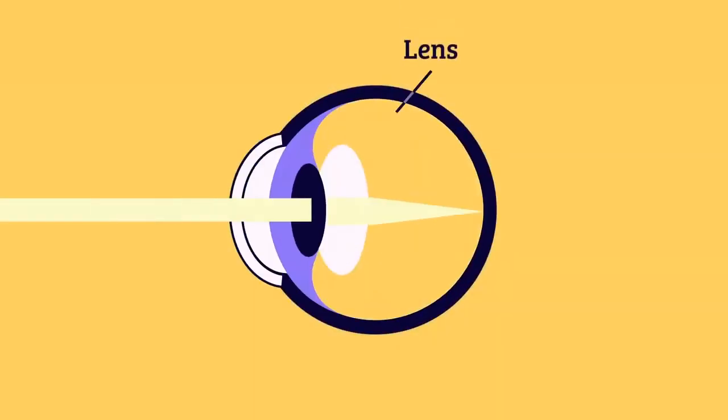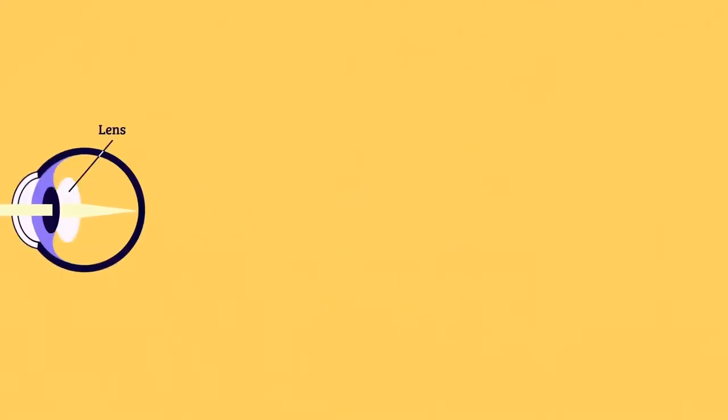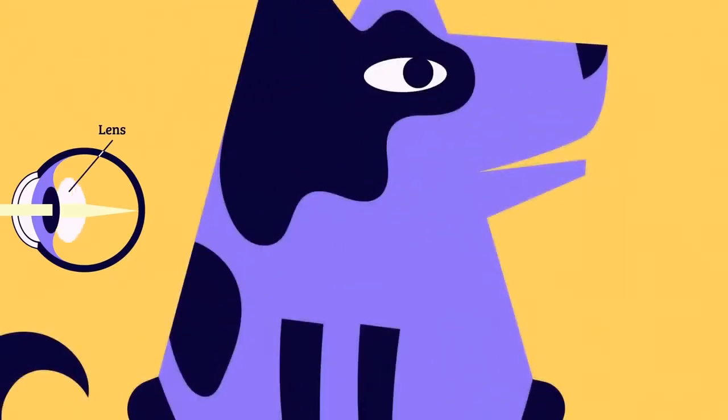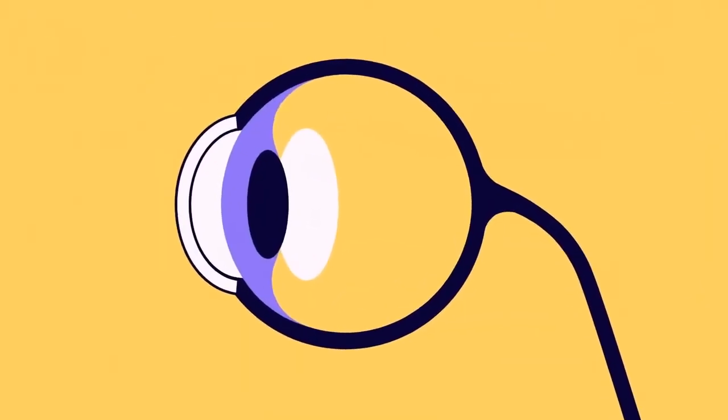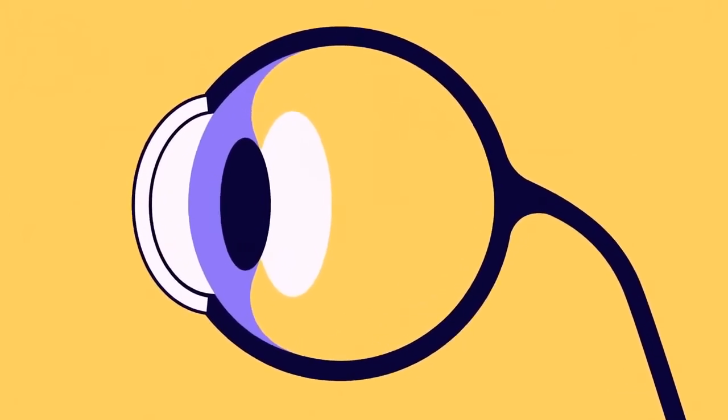Behind the iris is the lens of the eye. It helps focus the light coming into your eye so you can see things clearly. The lens flattens so you can see things that are far away and bends so you can see things up close. When the lens, cornea, and pupil are all working together properly, they will focus light on the back of the eye.